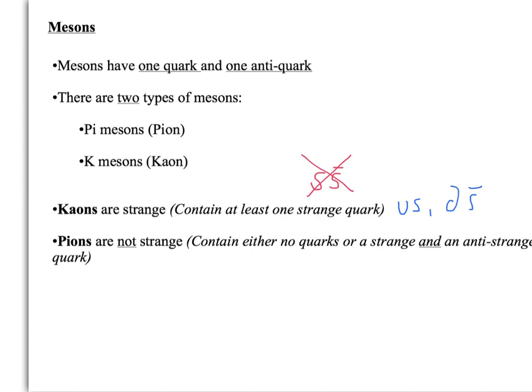Now, pions are not strange. So you might have an up and a down, or two downs, two ups. Or just like the one above, you can actually have a strange and an anti-strange, because their strangeness cancels out. And then you get left over with no strangeness. So those all end up not being strange at all, which makes them a pion.